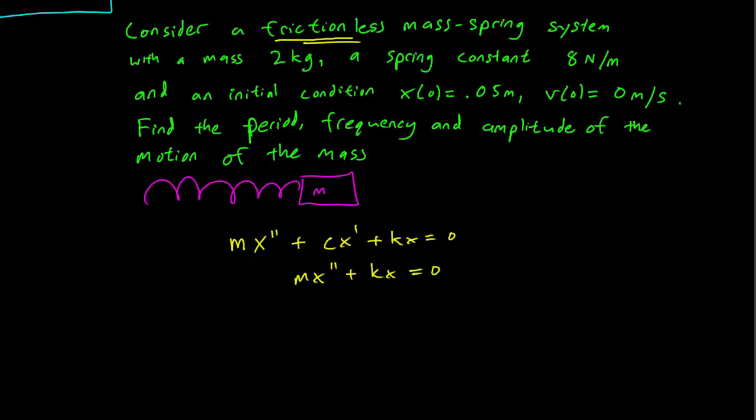m is going to be 2 kg mass and k is going to be 8, that's the spring constant. And obviously we can divide by 2 to make things a bit easier.